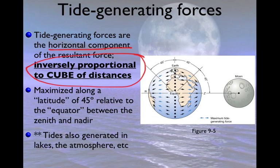It should also be mentioned that tides are generated in lakes — the big lakes, like the Great Lakes, have tides that you can see sloshing back and forth, though they're not as big as oceanic tides. You can also see tides in the atmosphere. And believe it or not, you can actually see tidal effects in the crust of the Earth as well as the crust of the Moon — they deform slightly. These tend to be moderately sized bulges, but compared to what we see around us, we can't see the difference and don't really notice them.